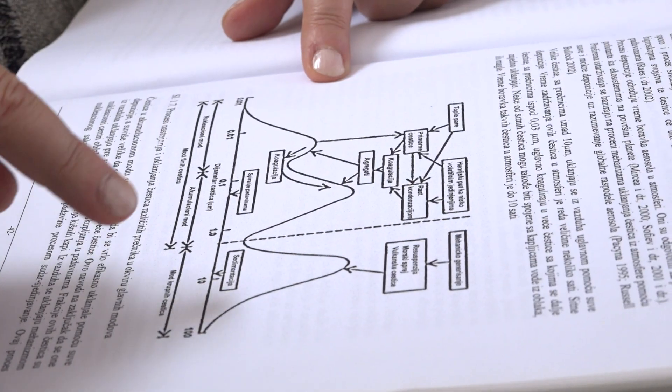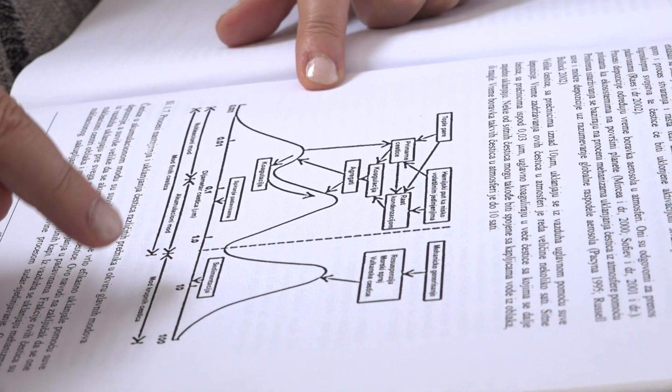Da bi moglo da se nasluti šta su izvori njihovih emisija. I ne samo čestica nego i drugih konstituenata u vazduhu jer u tim atmosferskim reakcijama dolazi do formiranja čestica između organske materije i kiselih oksida, razne sitne čestice na kojima se adsorbuje organska materija ili drugi gasovi koji se nalaze u atmosferi. I sve to treba poznavati da bi moglo da se nasluti šta je to što određenu lokaciju zagađuje.